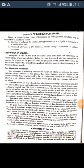Air Pollution Control Part 2. There are essentially two classes of techniques by which gaseous pollutants may be removed from an effluent stream. The first technique is by sorption of pollutant through absorption in a liquid or adsorption on a solid surface. The second technique is by chemical alteration of the pollutant through combustion or catalytic treatment.